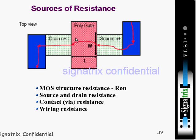Wherever active and poly will cross, this is the width of the transistor and this is the length. The factors contributing resistance include MOS structure resistance, which is the on resistance, and source and drain resistance because of source and drain.